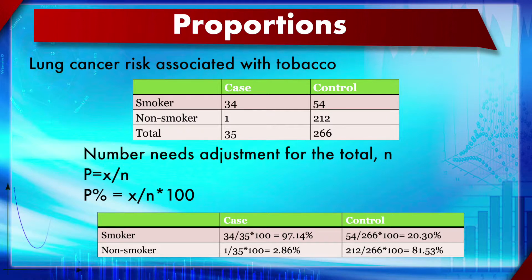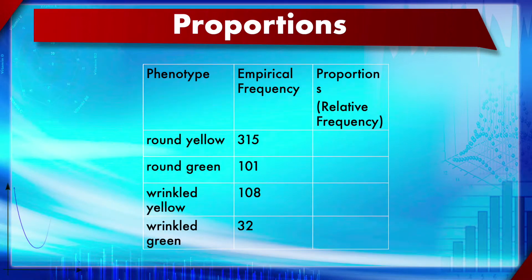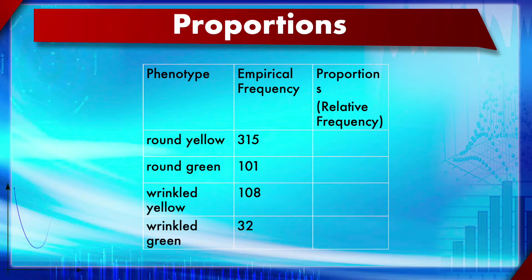We can apply the same proportion concept to Mendel's results of round yellow, round green, wrinkled yellow, and wrinkled green, where we already have empirical frequencies. Add a total row and express each count - for example, 315 divided by the overall total multiplied by 100 - as a percentage proportion. This makes it easy to identify which category has the highest proportion.